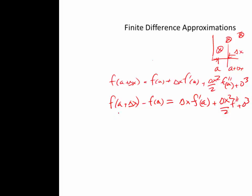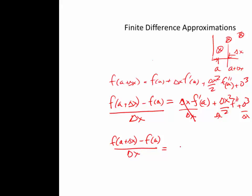Now I can divide both sides by delta x. Dividing each term gives f prime at a, plus delta x squared divided by delta x — so I just get delta x times the second derivative at a — plus terms of order delta x squared, because that delta x cancels one of them.